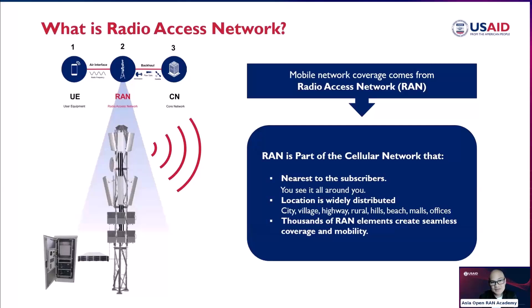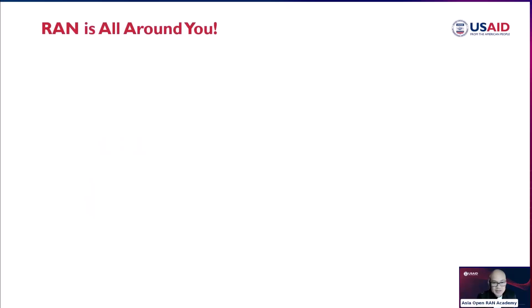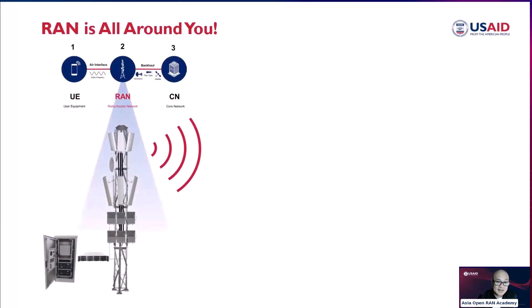Cell sites can be found on mountains, rooftops, and wall-mounted on buildings. Their locations are widely distributed, and since they are not transmitting at high power, thousands of RAN elements create seamless coverage and mobility. RAN is all around you. Have you ever stopped to think about how your mobile device is able to connect to the internet, make calls, and text while you're on the go? It's all thanks to the Radio Access Network that's all around you.